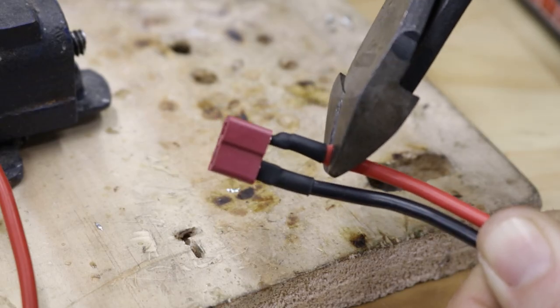If you're soldering a connector to a battery, only work with one wire at a time to avoid the chance of short-circuiting and damaging something or hurting yourself.